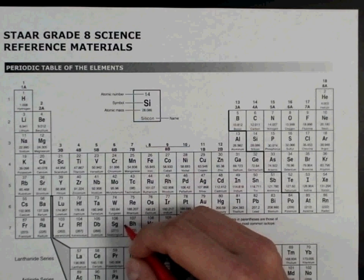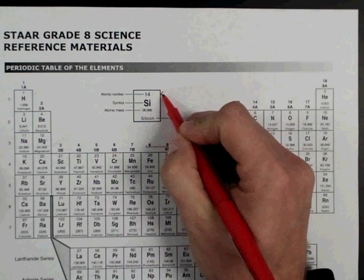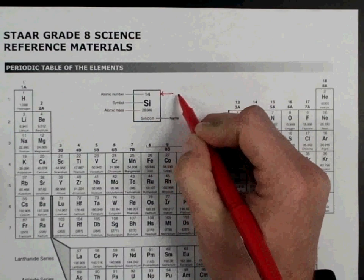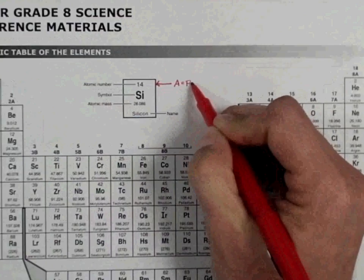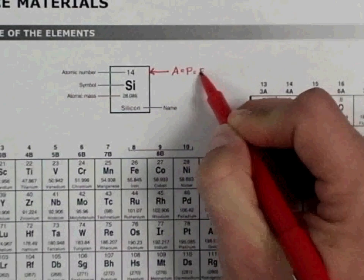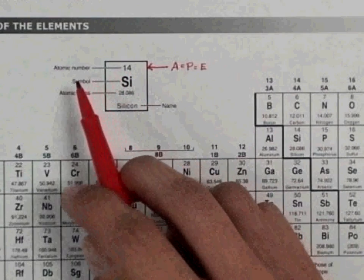The first thing we're going to talk about is we want to make sure that A=P=E is represented on the periodic table. A=P=E just means that the atomic number equals the number of protons equals the number of electrons. We're going to put that right up there by the given box from the periodic table.